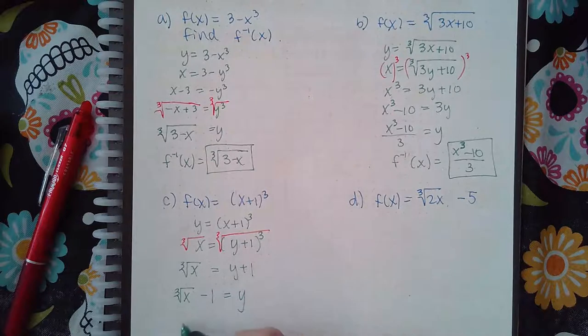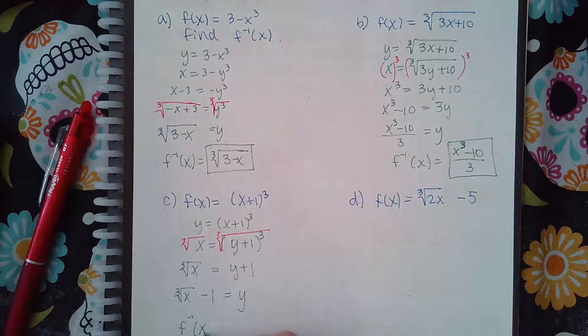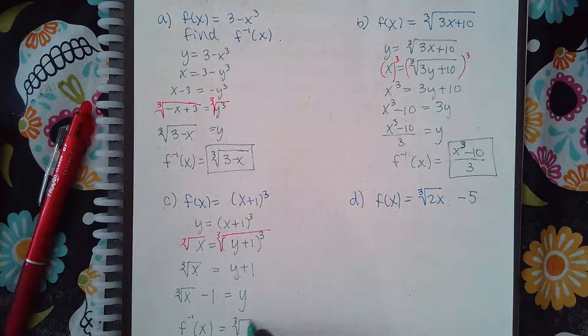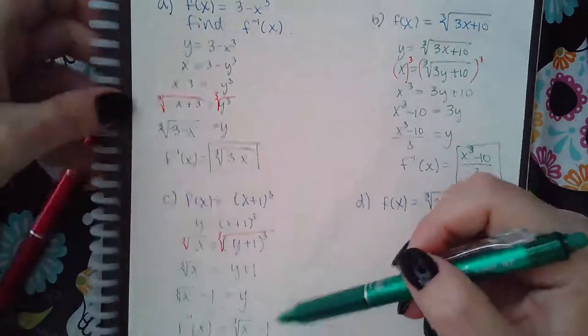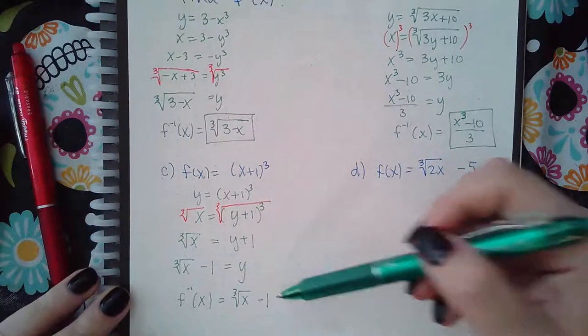Now notice this time the 1 is not inside the radical. So there's a difference between when everything is inside the radical and when you have a term that is not inside the radical.